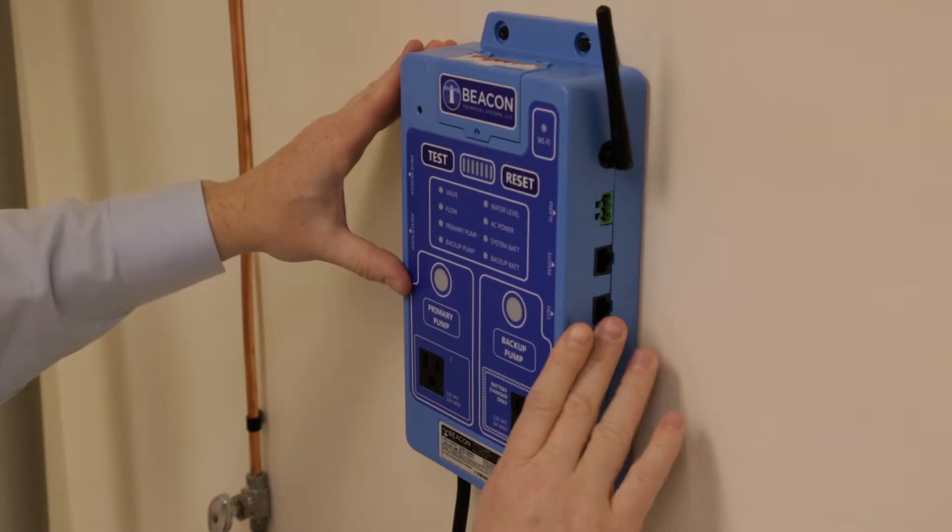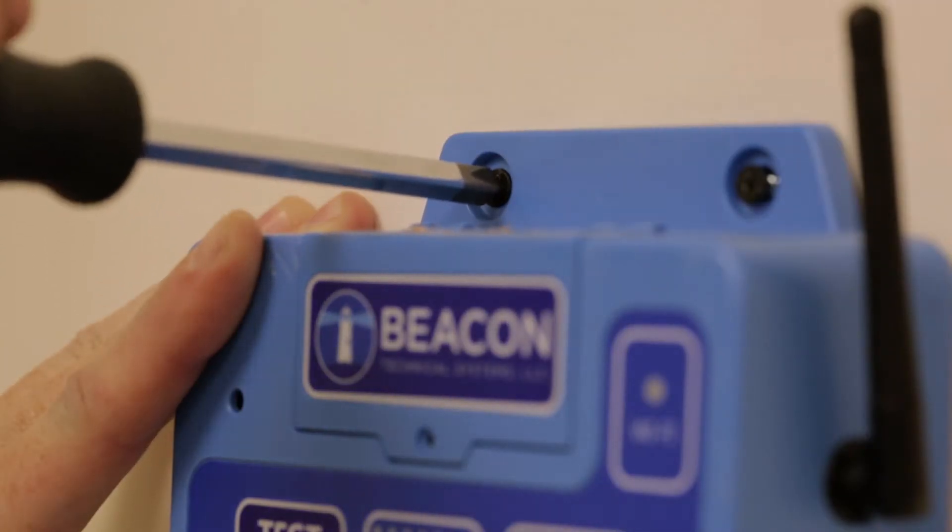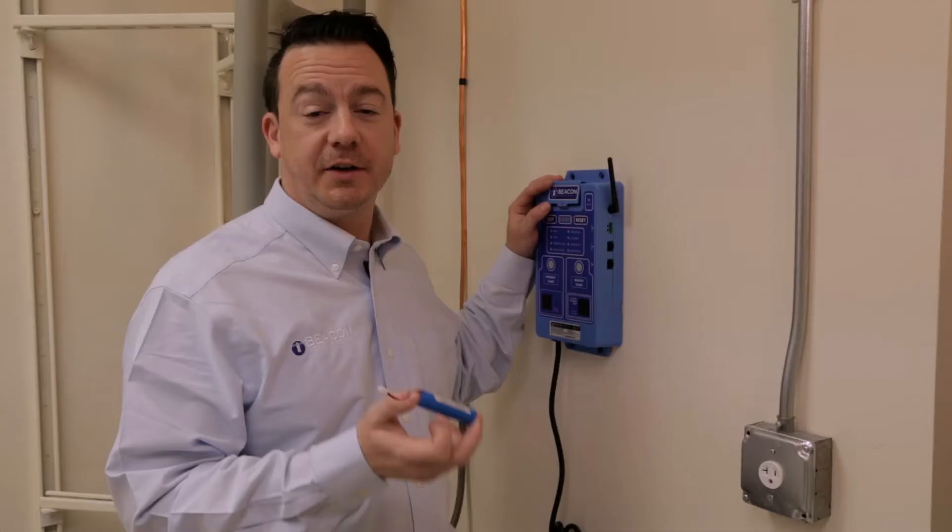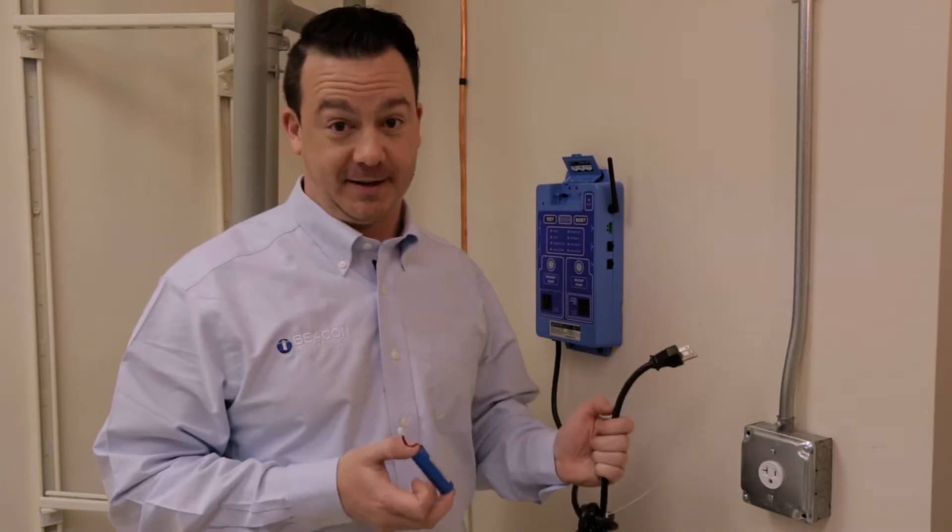Next, mount the controller using the supplied mounting hardware. It can be mounted to the wall or directly to the discharge pipe. Remember, do not install the internal controller battery or connect the controller to an AC outlet at this time.